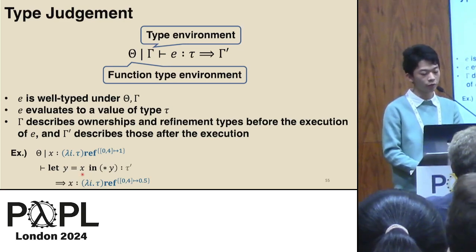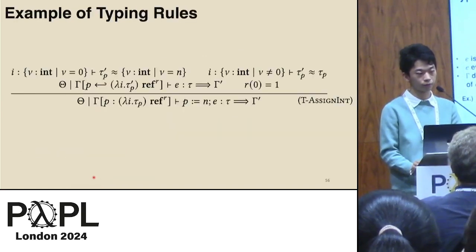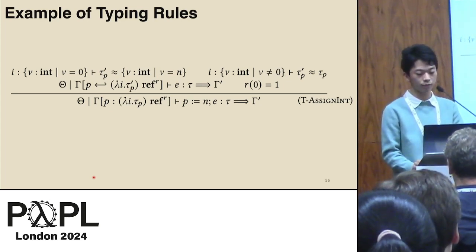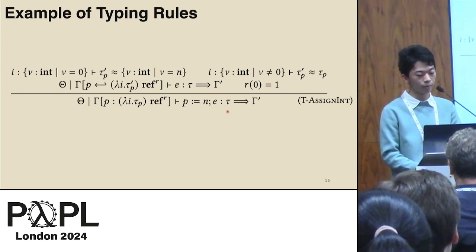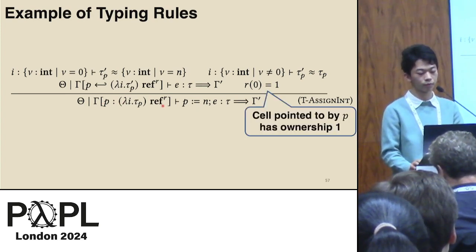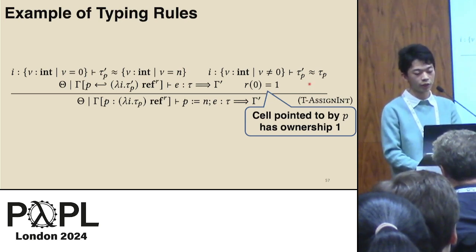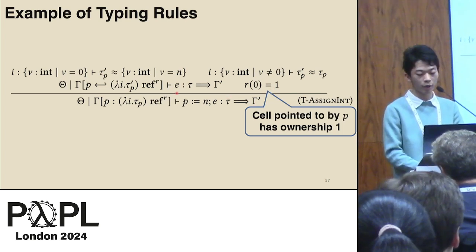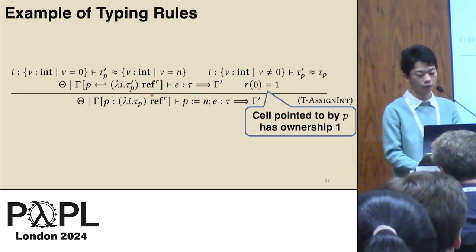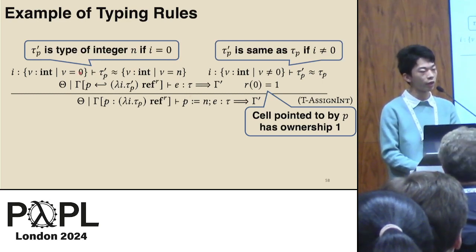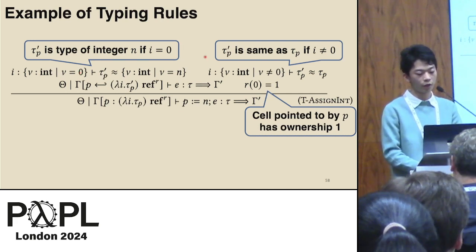Consequently, x has half ownership from index 0 to 4. Here is an example of typing rules — this is the rule for assignment. For this assignment to be valid, P must have a pointer type as described in the type environment, and P must have the full ownership 1 as described by R0 equal 1. After the assignment, the type of the value stored at P is updated to tau P prime, where this condition says that the value of P0 is now N, and the other cells remain unchanged.